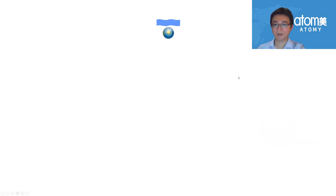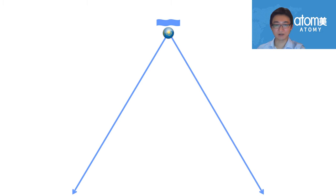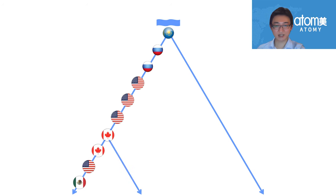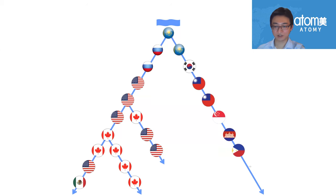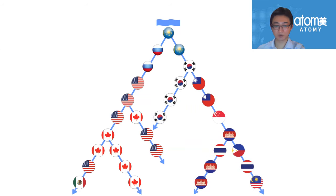Let's look at another example to make it more understandable. You have your left leg and right leg, and you can register partners from different countries. Your partners can also register other partners. This creates an international structure with partners all over the world — from the USA, Canada, Russia, Kazakhstan, Korea, Cambodia, Taiwan, and more.